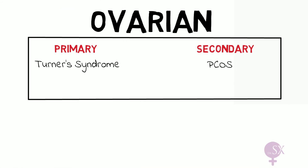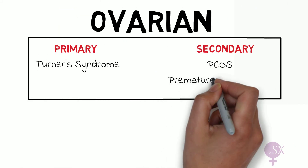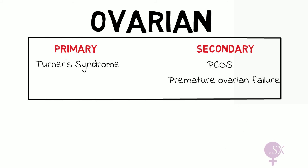Another ovarian cause of secondary amenorrhea is premature ovarian failure — in a nutshell, this is when the ovaries stop working before 40 years of age, and essentially the patient goes into menopause.